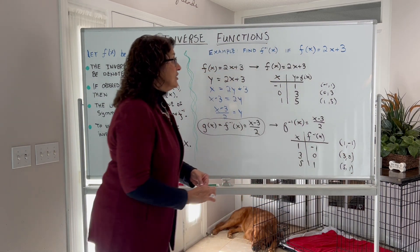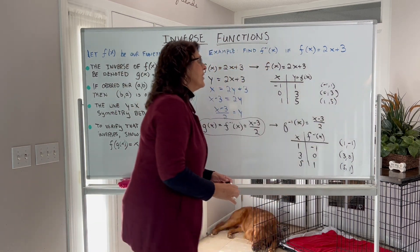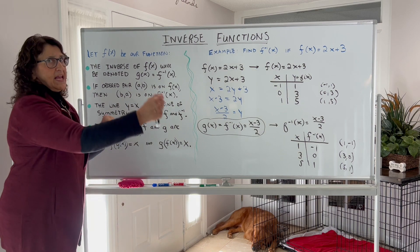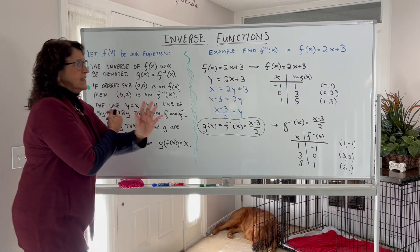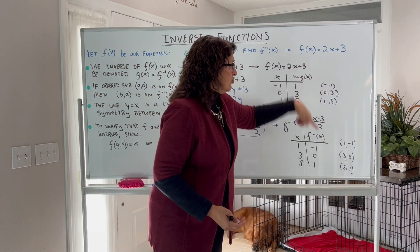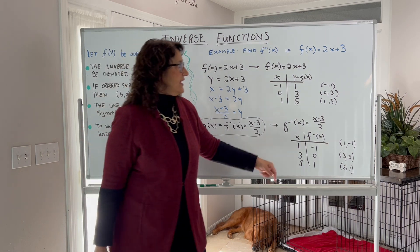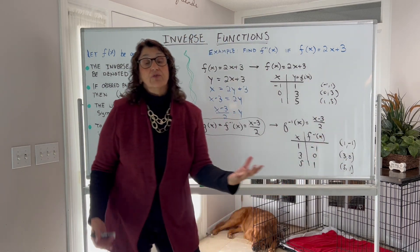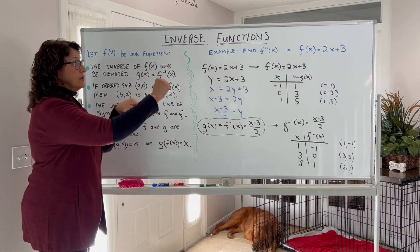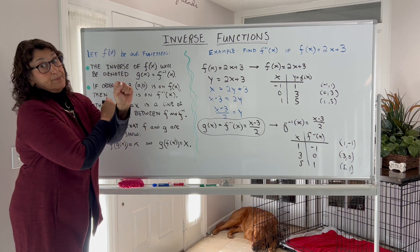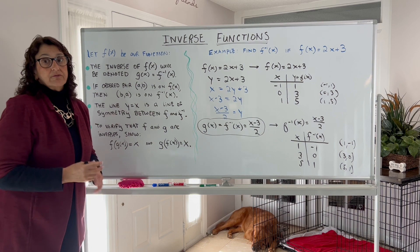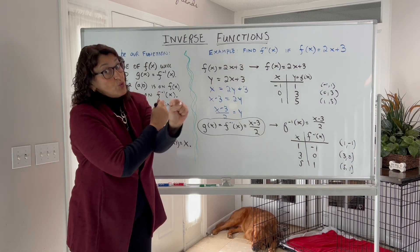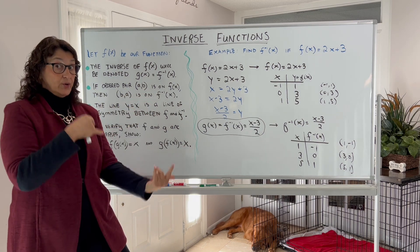Note the property: if (a, b) is on the function, then (b, a) is on the inverse. On the function we have (−1, 1), so (1, −1) is on the inverse — and we computed that. We have (0, 3) on the function, so (3, 0) is on the inverse. We have (1, 5) on the function, so (5, 1) is on the inverse. This is why, when finding an inverse, you switch the x and y variables — because we know that property holds.